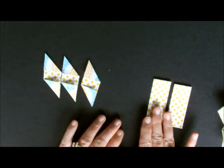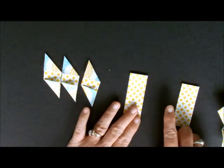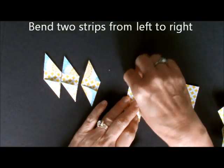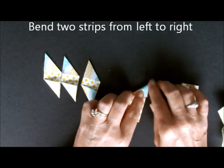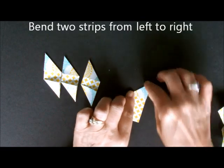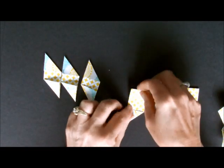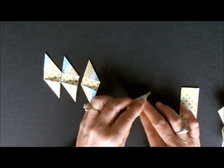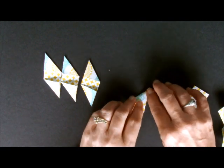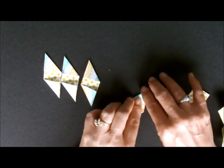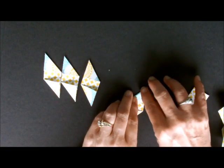For these last two over here we're going to do just the opposite. We're going to take them and go from the left to the right. We're going to bend this one over left to right. We're going to turn it upside down. We're going to bend from left to right.